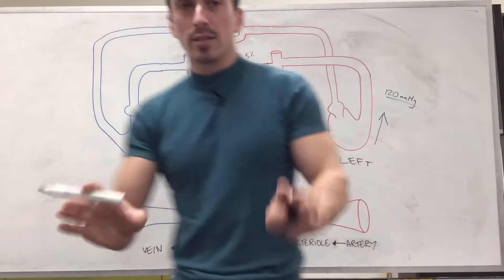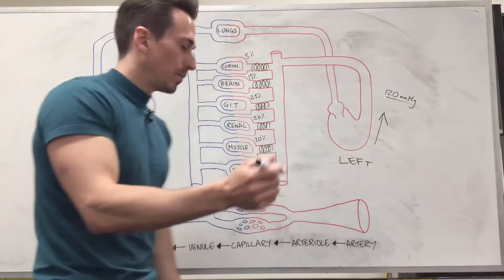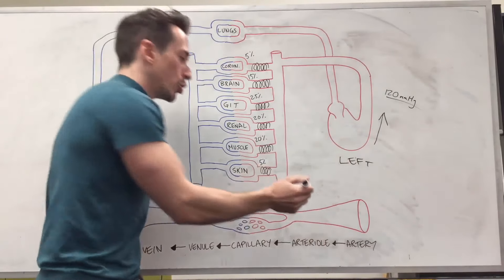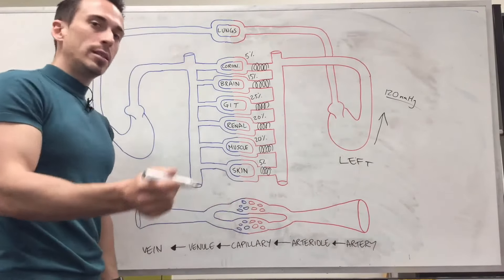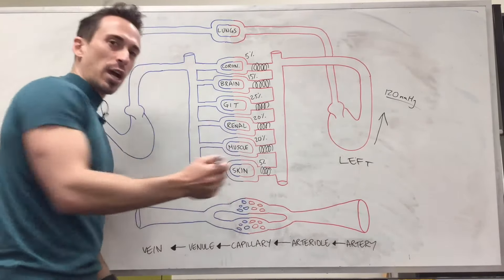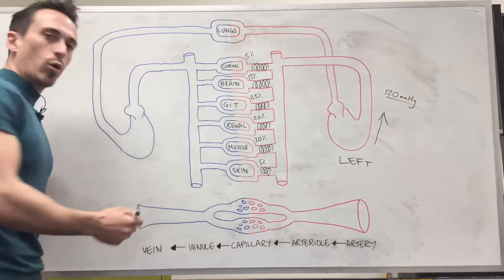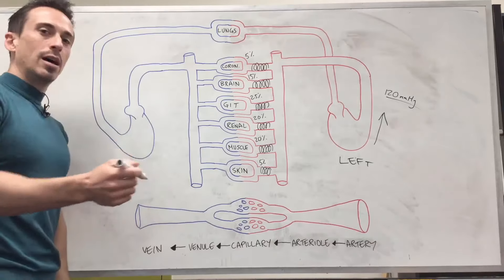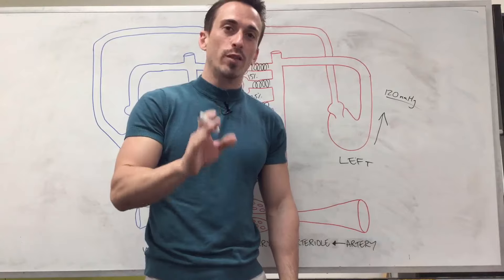So what do we have now? Just to summarize: we have arteries, elastic tissue, compliant; arterioles, smooth muscle, resistance; capillaries, porous, exchange; venules and veins, thin walled, wider diameter, capacitance vessels, holds most of the bloods. So that's a quick run through of the blood vessels of the body.